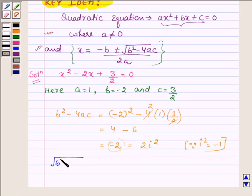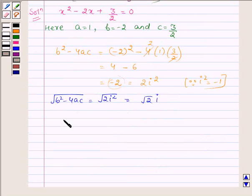Now, square root of b² minus 4ac will be square root of 2 iota square, which equals square root of 2 iota. And now let us find the solution. So x is minus b plus minus square root of b² minus 4ac upon 2a.